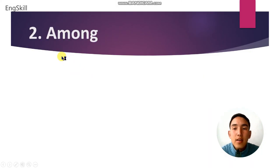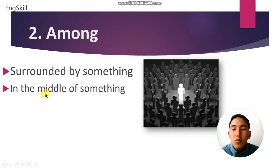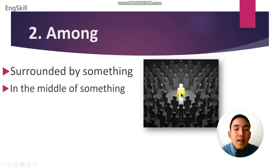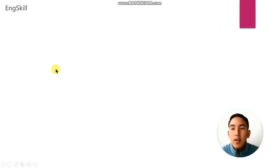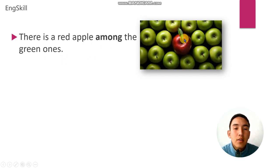Word number 2 is among. Among means surrounded by something, or in the middle of something. As you can see in this picture, this is among the others. For example: there is a red apple among the green ones.